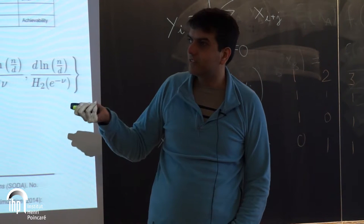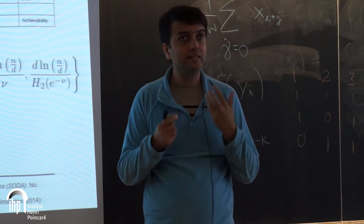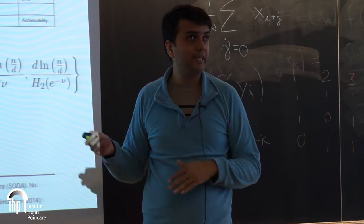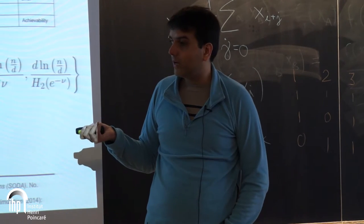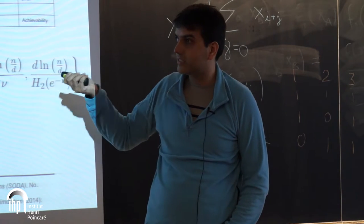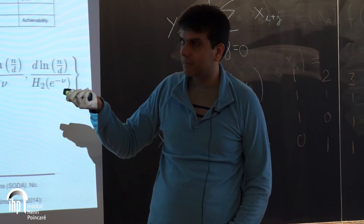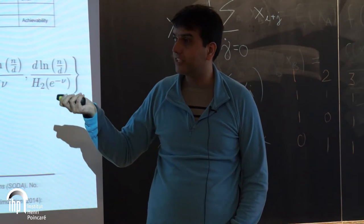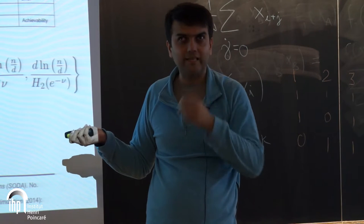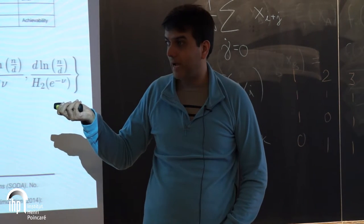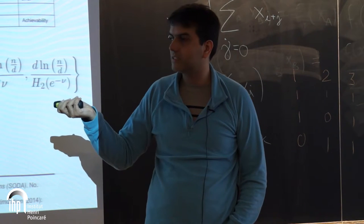Here's what's known, and the graph is really what I find most interesting. The y-axis is the number of tests divided by d log(n/d) — d log(n/d) is the information theoretic limit — so you'd hope it equals 1. The x-axis is theta, when the number of defectives scales as n to the theta. The maximum likelihood decoder using random matrices achieves the blue curve. The DD algorithm, which is computationally efficient, matches the corresponding bound up to a certain point and then diverges. The green line is also computationally efficient; the dotted line is not.